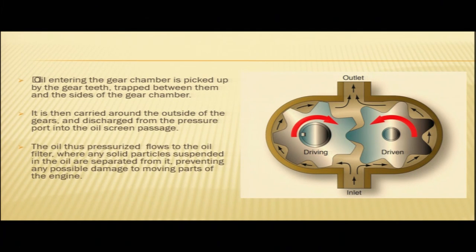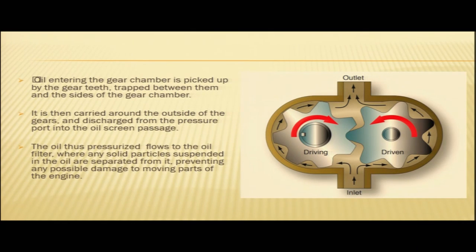Oil entering the gear chamber is picked up by the gear teeth, trapped between them and the sides of the gear chamber, carried around the outside of the gears, and discharged from the pressure port into the oil screen passage. After being pressurized, the oil flows to the oil filter where any solid particles suspended in the oil are separated, preventing possible damage to the moving parts of the engine.